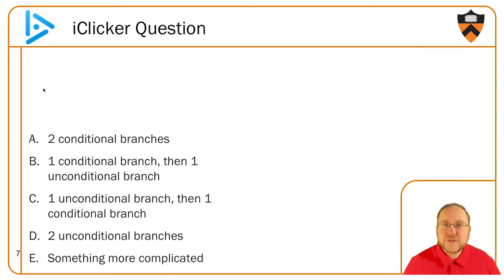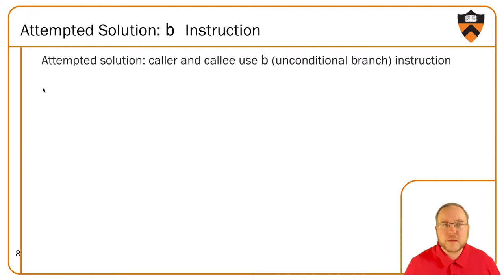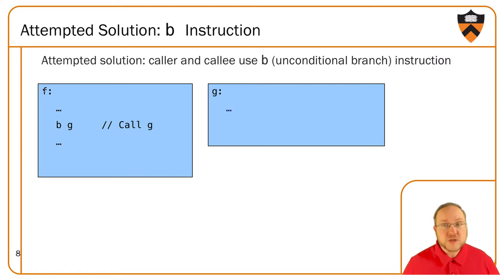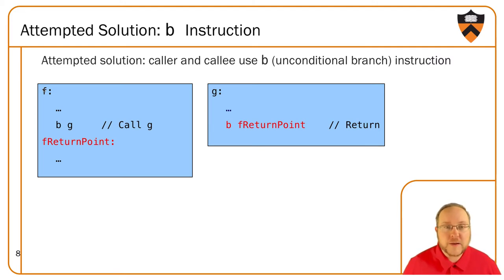How do we do that? We can use the B instruction to do an unconditional branch to a label. Our functions are indicated by labels in the text section. So calling it is straightforward — we have branch to G in this case. And by the exact same structure, just in the opposite direction, we can get back. This looks great on the slide, but as you might expect — the slide is entitled 'Attempted Solution' after all — there is a problem.